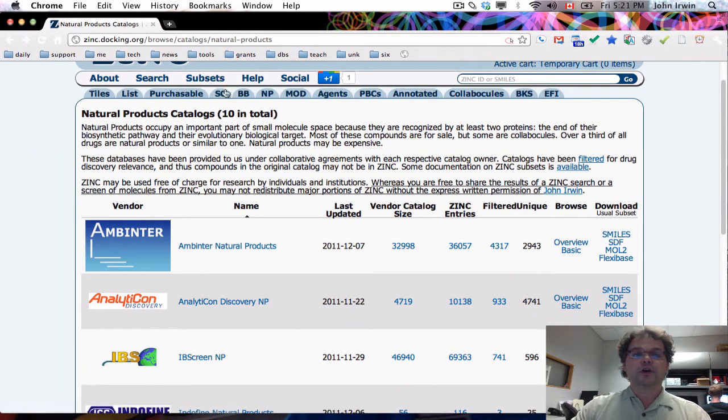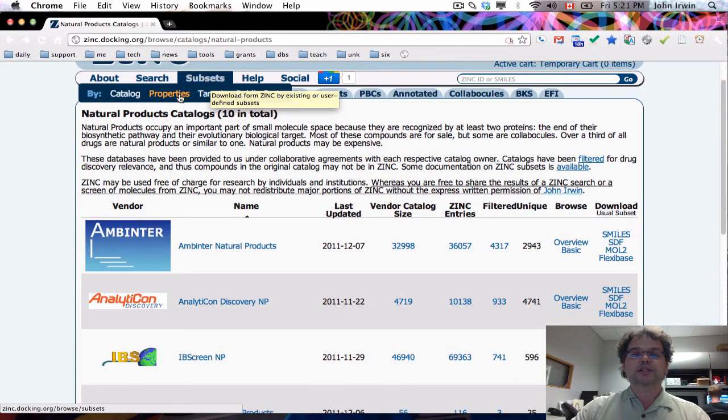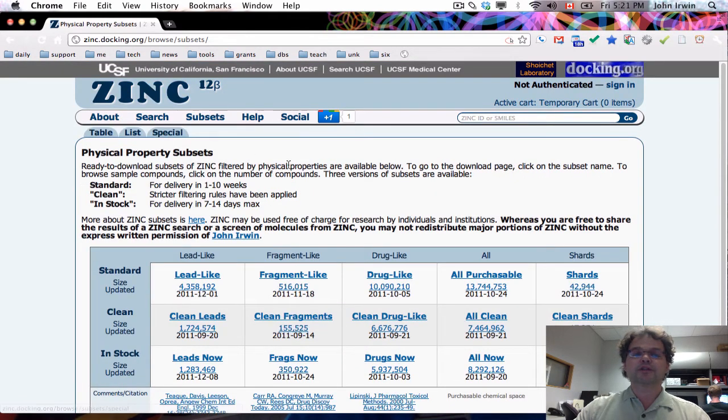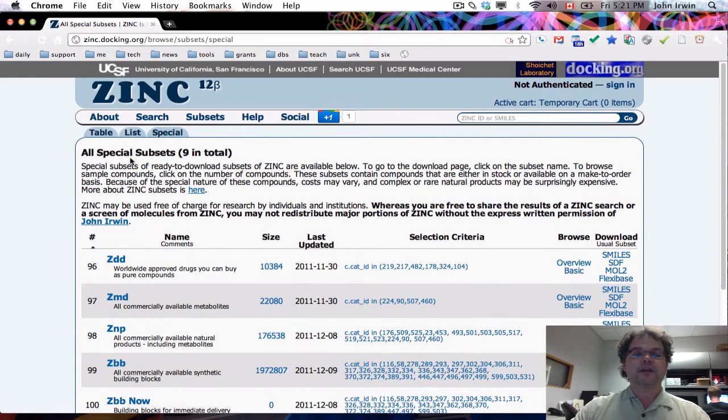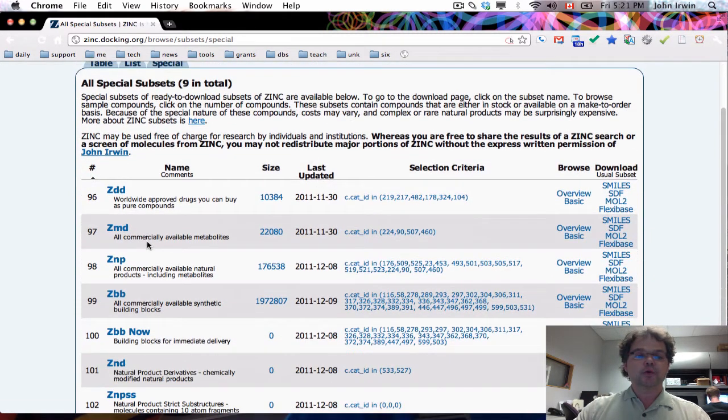We've also created a second subset under Subsets Properties. This is where you'll find these popular lead-like and fragment-like subsets of ZINC. But if you go into the Special tab, then you'll see these special subsets we've created, and one of them in particular is called ZNP. It's subset number 98, and it's all commercially available natural products, which incorporates metabolites. We reckon that there are 176,000 molecules, which are both natural products and metabolites.